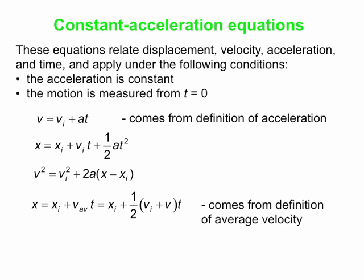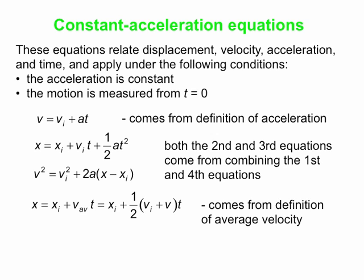The fourth equation is actually the definition of average velocity: average velocity is delta x over delta t. In the special case of constant acceleration, the average velocity equals the average of the initial and final velocities, so one-half times (v_i plus v). The other two equations can be obtained by combining the first and fourth equations. If you take the expression for v from the first equation (v_i plus at) and substitute it into the fourth equation, you get the second equation. If instead you solve the first equation for t and substitute into the fourth equation, you get the third equation.